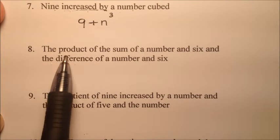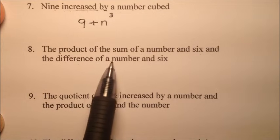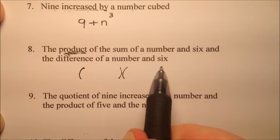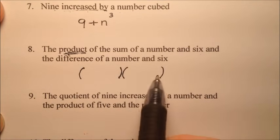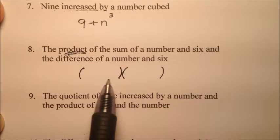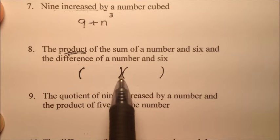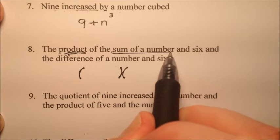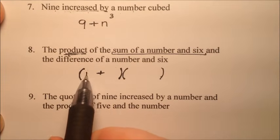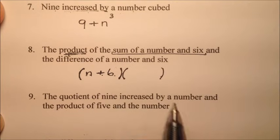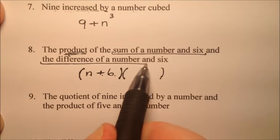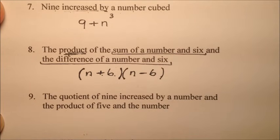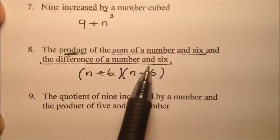Number eight says the product of the sum of a number and six, and the difference of a number and six. We've got a product, so I'll put the factors in parentheses. The first factor is the sum of a number and six — sum means add — so n plus six. The second factor is the difference of a number and six — difference means subtract — so n minus six. The answer for number eight is the quantity n plus six times the quantity n minus six.